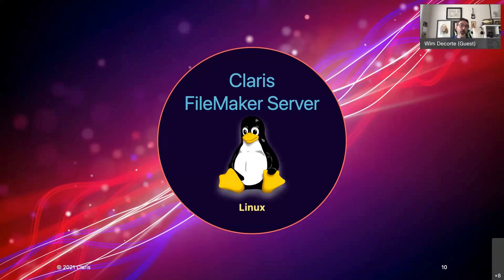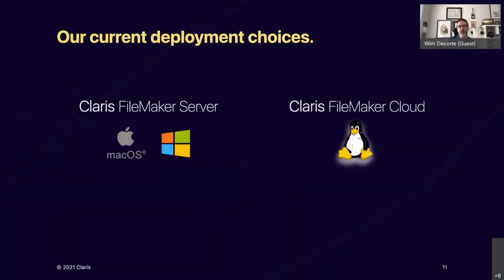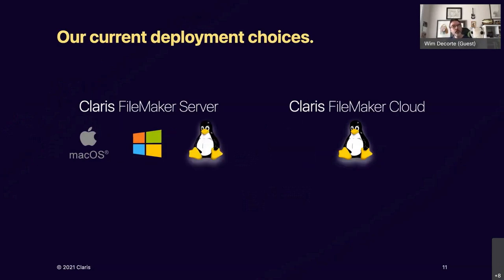We'll talk mainly about Claris FileMaker Server — the one you install yourself. The main points are: why would you care about having a Linux version of FileMaker Server, and how do you go about using it? A Linux version isn't entirely new — it's coming up to its first anniversary, released back in October/November 2020. Even before that, it was already used in the Claris FileMaker Cloud product. We now really have four deployment options.